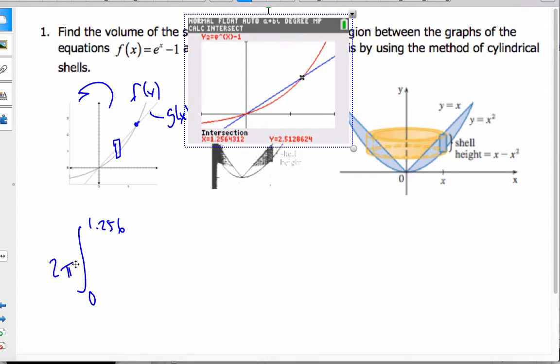I'm going to go 2π. My r is here, which is just x. My height, though, is this top curve g(x), which is 2x, minus the bottom curve, e to the x minus 1. That's the height, and that is going to be times dx, and I can find my volume for that.